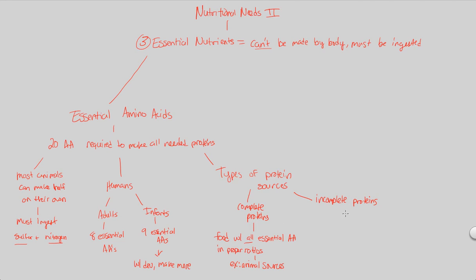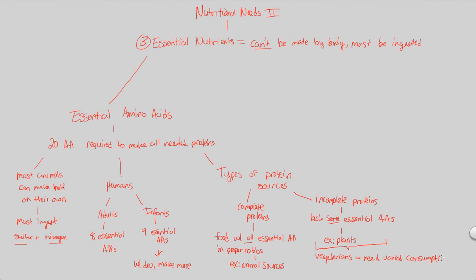Incomplete proteins simply lack some of the essential amino acids — they may have four or five, not all eight. A good example of this are plants. Vegetarians, who do not eat animal-based products, need to ensure they have a varied consumption of plants, because every single plant will not provide all essential amino acids. But if you mix different types of plants, you will get the correct amounts. They can't just keep eating the same plant over and over — they simply won't get all the essential amino acids needed.